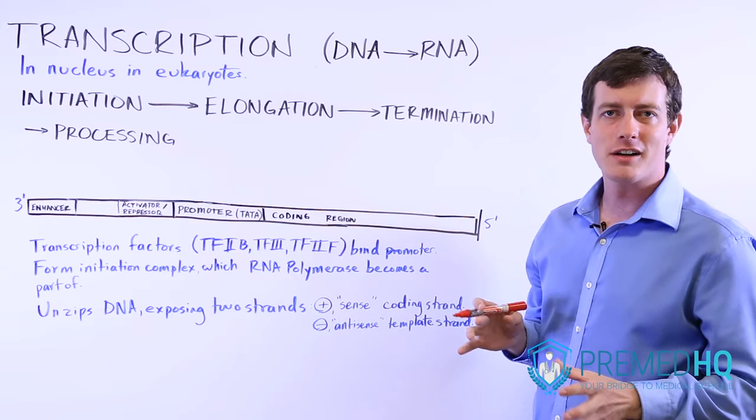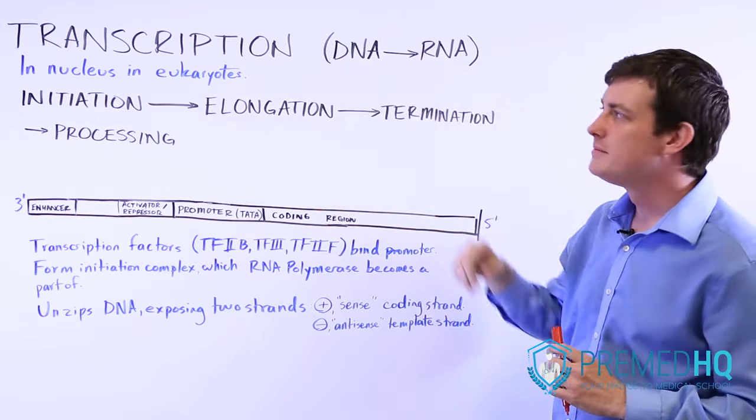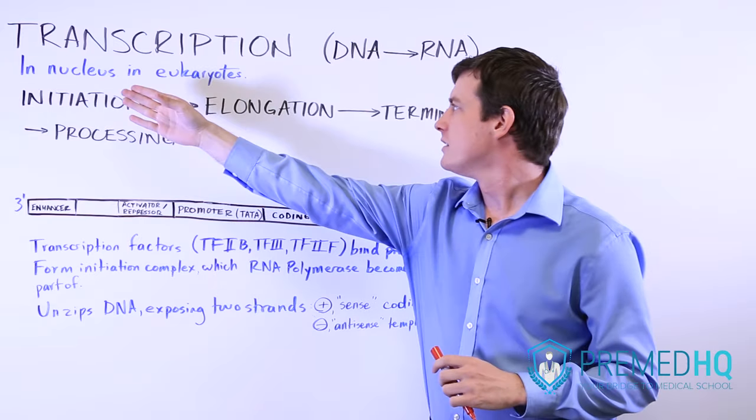The first step in the central dogma is the conversion from DNA into RNA, and this is a process known as transcription. You transcribe an RNA from a DNA template.